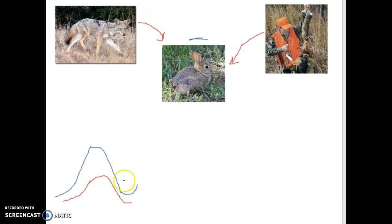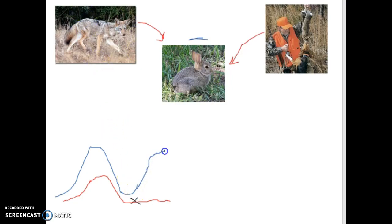Some folks think: if we suppress the coyote population, keep it down by killing coyotes, that will allow the rabbit population to go up and stay up. As hunters, we then have an easier chance of hunting. Maybe we kill some rabbits and their population fluctuates a bit, but it won't drop way down like it does because of the coyotes.